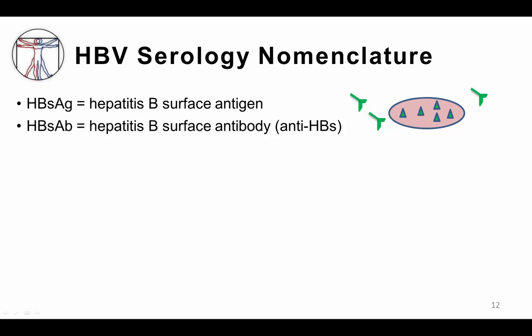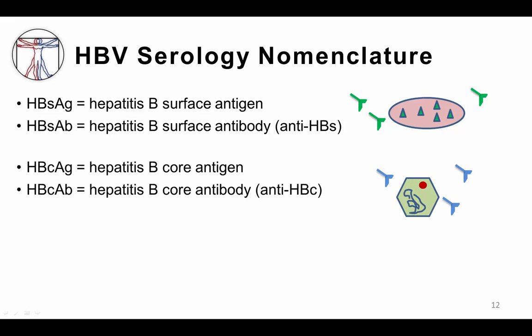Before moving on to diagnosis, let's define the various components of hepatitis B, as there are several and it can get confusing. Hepatitis B surface antigen is written as HBsAg — these antigens are composed of envelope and surface proteins. Antibodies against the surface antigen are called hepatitis B surface antibodies, abbreviated HBsAb or anti-HBs. The hepatitis B core antigen is abbreviated HBcAg, and is composed of the viral capsid, viral DNA, and viral polymerase. Antibodies against the core antigen are called hepatitis B core antibodies, abbreviated HBcAb or anti-HBc.